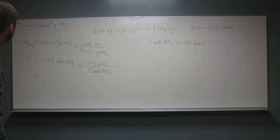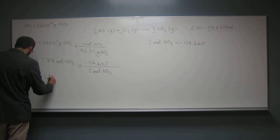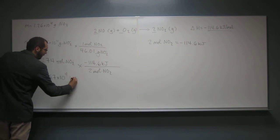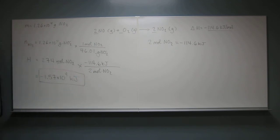So what do we do? We take 274 divided by 2 and multiply that by negative 114.6. And to three significant figures, you get negative 1.57 times 10 to the 1, 2, 3, 4. Kilojoules.